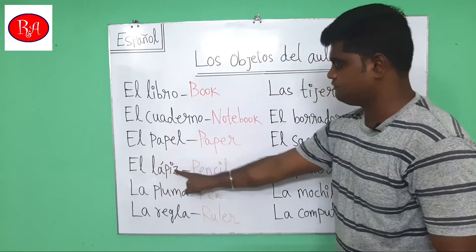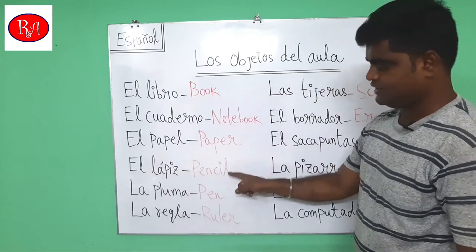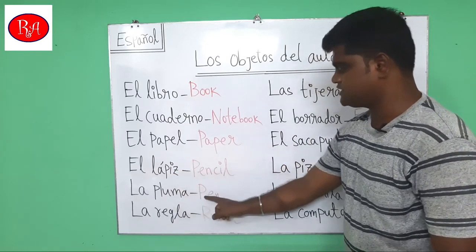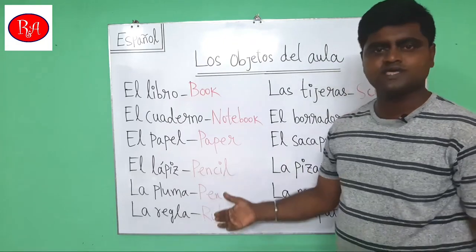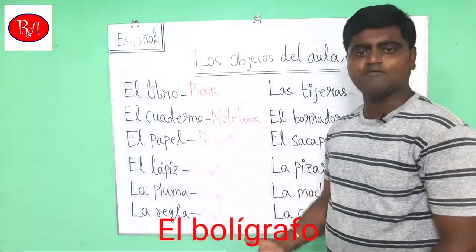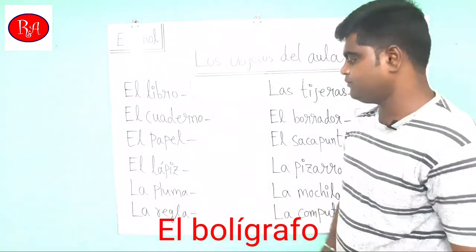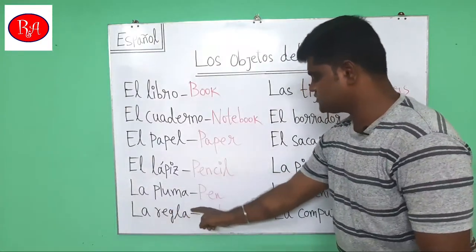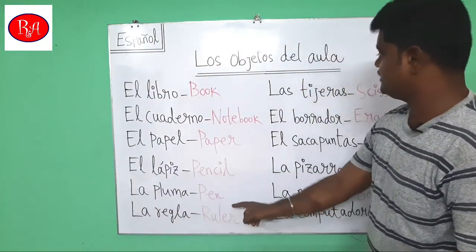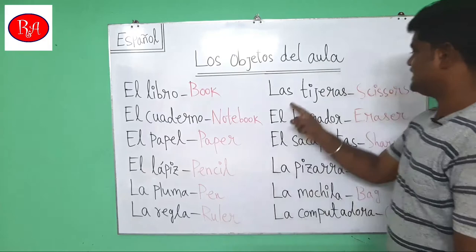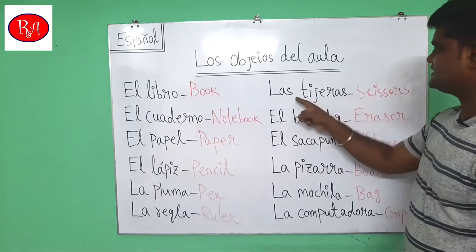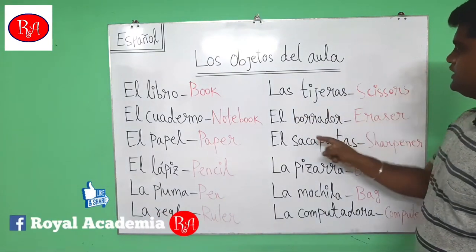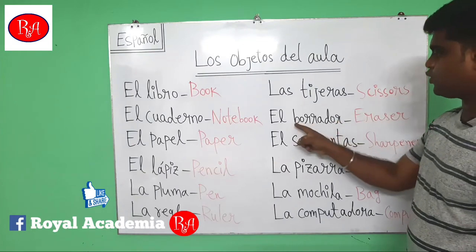La pluma — la pluma — that means pen. You can also say el bolígrafo — el bolígrafo. La regla — la regla — means ruler. Next word: las tijeras — las tijeras — that means scissors.